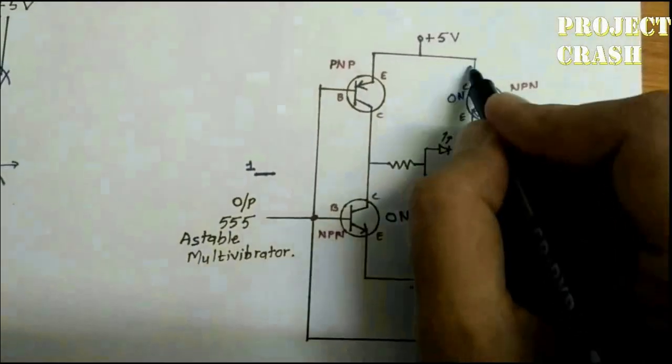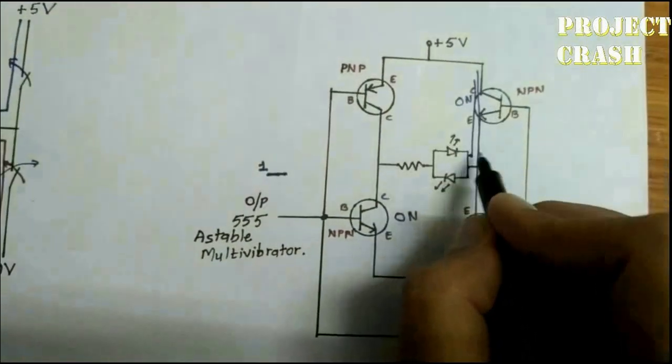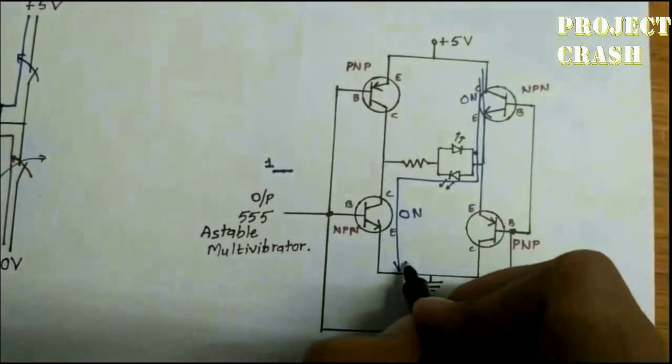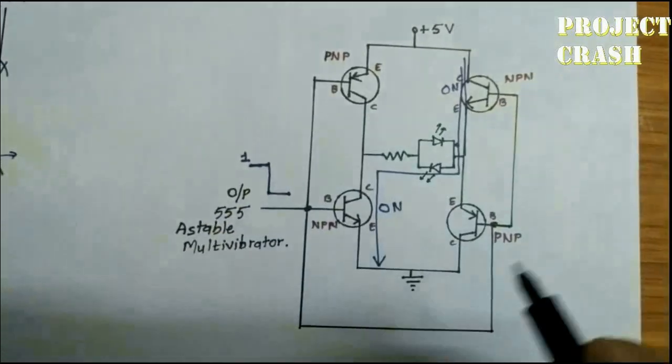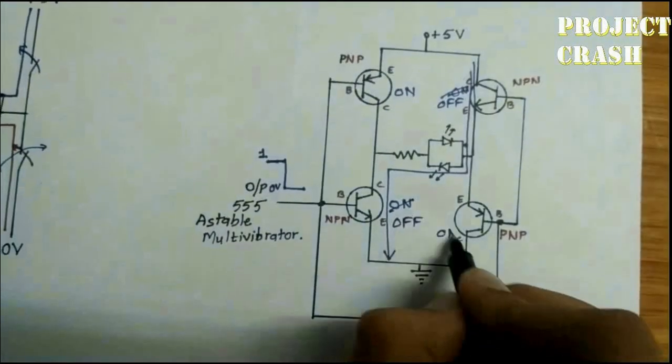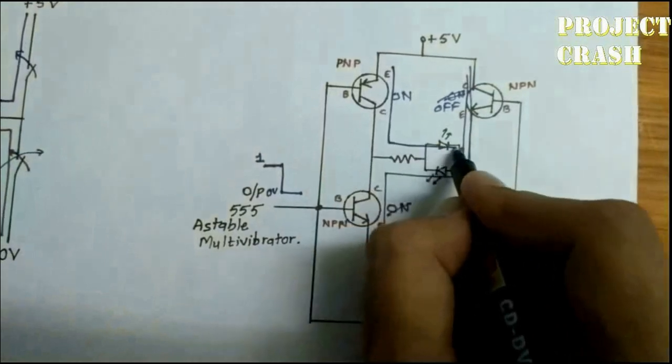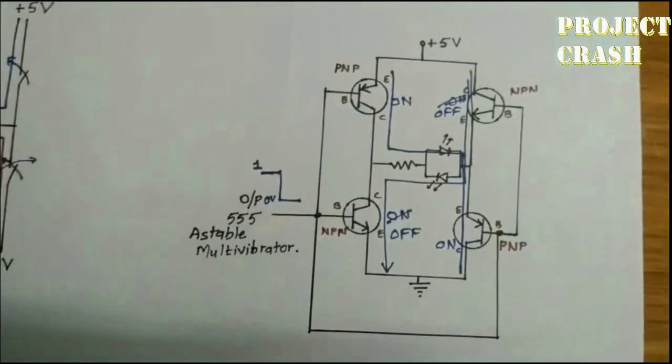Current will flow from right to left at the low level of 555 output. The PNP transistor will be in ON state and current flows from left to right. That means it also generates AC signal.